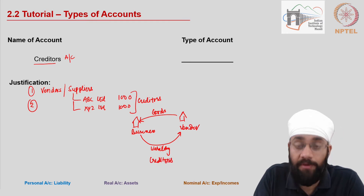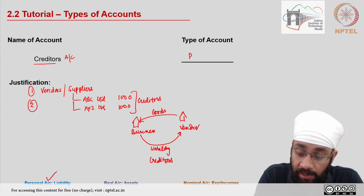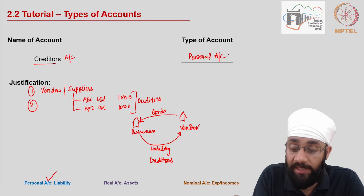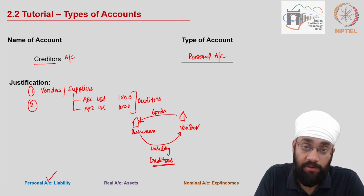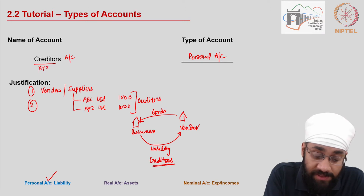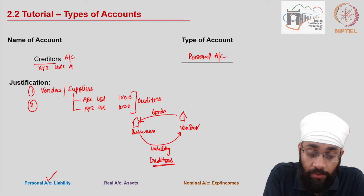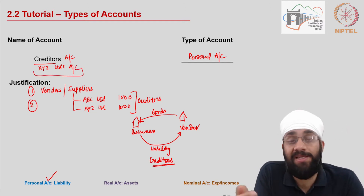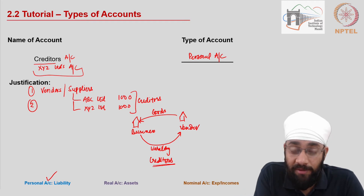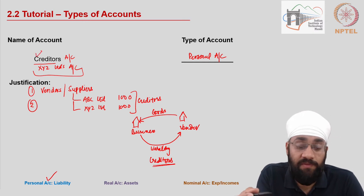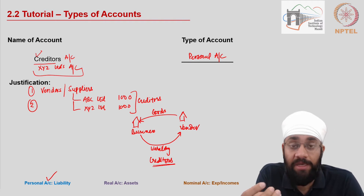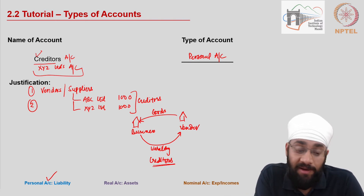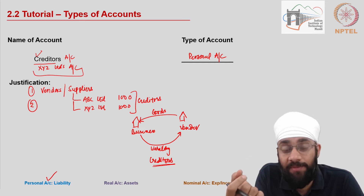Creditors are a liability, and all liabilities are categorized as personal accounts. You could name the creditor account as 'XYZ Limited's account,' but then you need more information to decide which type of account it should be — whether this is a supplier or a buyer. For simplicity we say 'creditors,' but if given a name in an assignment, you have to figure out if it's a supplier or vendor. If it is, it's a liability for the business and hence a personal account.